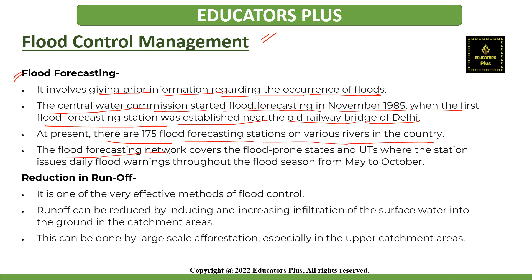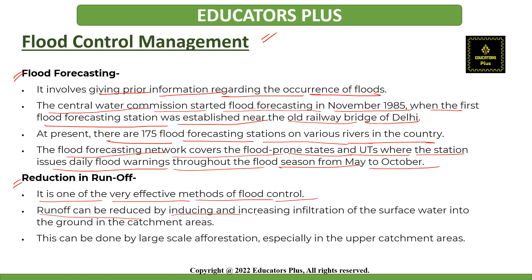The flood forecasting network covers flood-prone states and union territories, where stations issue daily flood warnings throughout the flood season from May to October. The next measure is reduction in runoff, which is one of the most effective methods of flood control. Runoff can be reduced by increasing infiltration of surface water into the ground in catchment areas, and this can be done by large-scale afforestation.